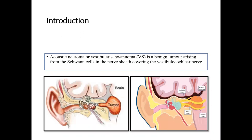Acoustic neuroma, or vestibular schwannoma, is a benign tumor arising from the Schwann cells in the nerve covering the vestibulo-cochlear nerve. The acoustic neuroma is not the most accurate name because most of these tumors arise in the vestibular part — specifically the superior and inferior vestibular nerve.